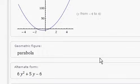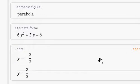It is a parabola. There's the alternate form: 6y squared plus 5y minus 6, which is what we calculated. There are the roots for y: negative 3 halves and 2 thirds.